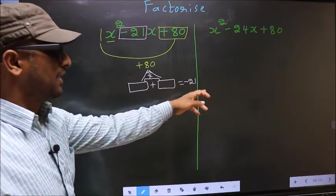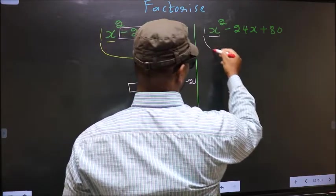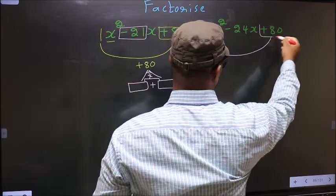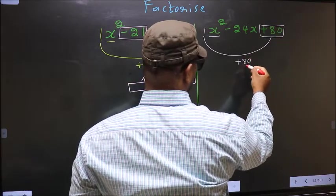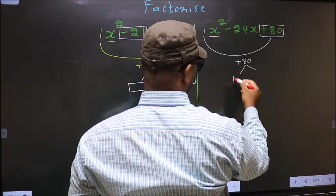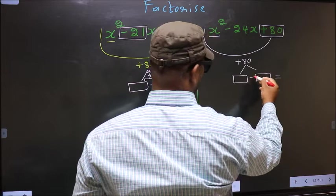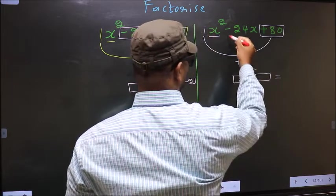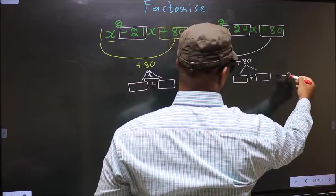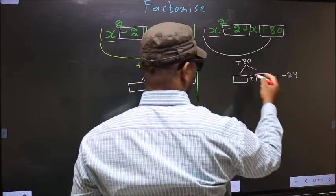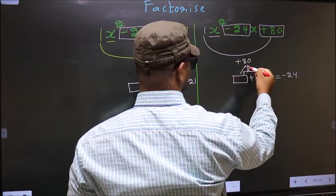Do the same for the second expression: the x squared coefficient 1 multiplied by the constant plus 80 gives plus 80. Now look out for two numbers such that when you add them, you get the middle coefficient, which is minus 24, and when multiplied, you should get plus 80.